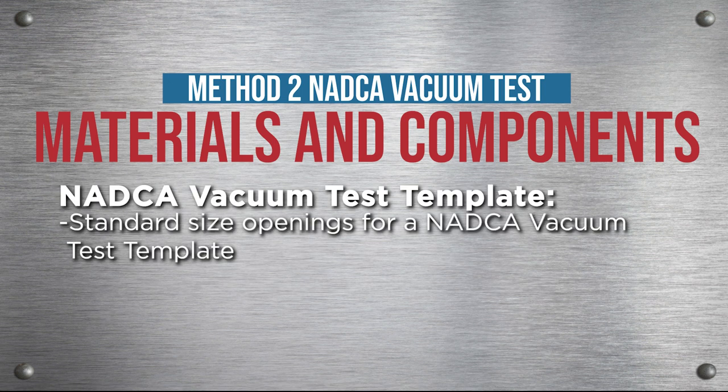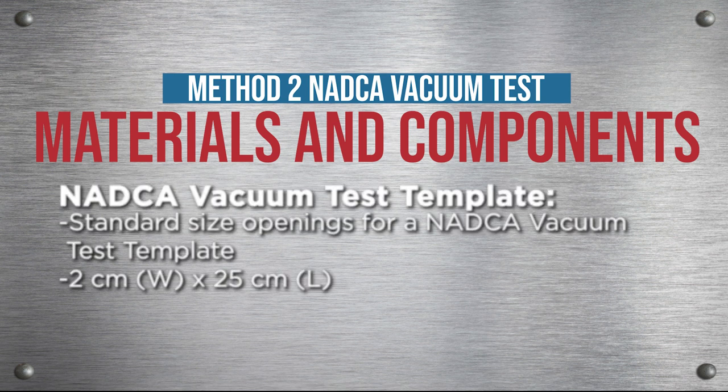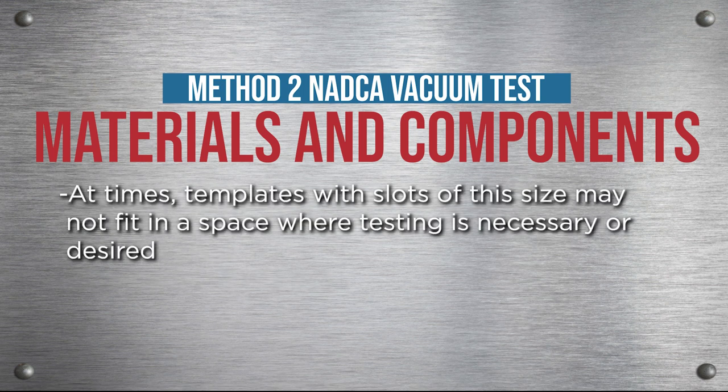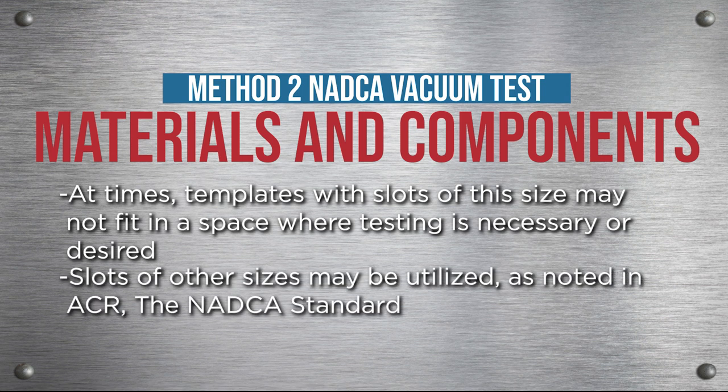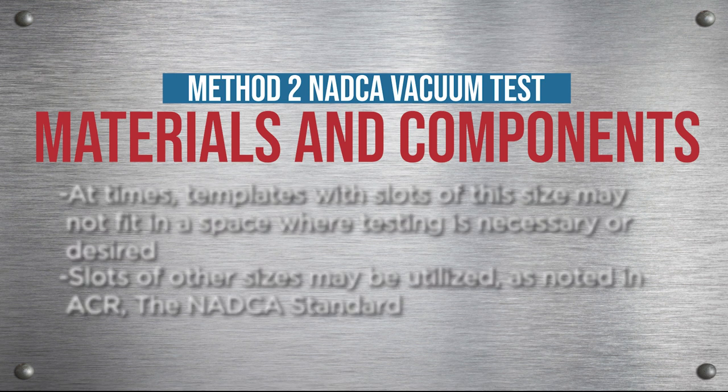The standard size openings for the NADCA vacuum test template are 2 centimeters in width by 25 centimeters in length. At times, templates with slots of this size may not fit in a space where testing is necessary or desired. Slots of other sizes may be utilized as noted in ACR, the NADCA standard.